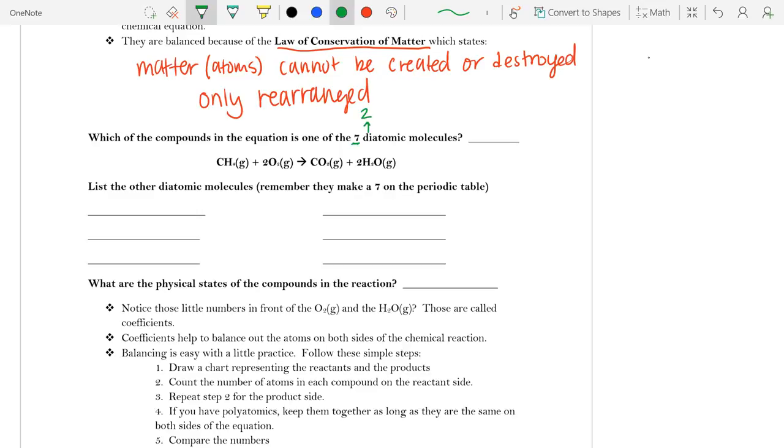Now, the prefix di we know means two, and atomic is probably talking about atoms, and so molecules. So a diatomic molecule is set up as two atoms.